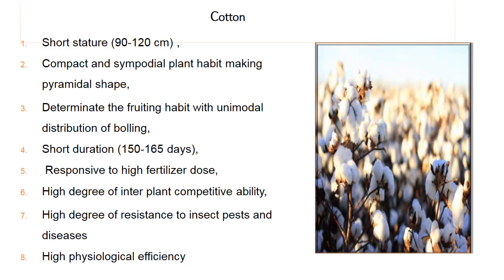For cotton, the idiotype defined is: short stature of 90–120 cm, compact and sympodial plant habit making a pyramidal shape, determinate fruiting habit with unimodal distribution of bolls, short duration of 150–165 days, responsive to high fertilizer dose, high degree of inter-plant competitive ability, high degree of resistance to insect pests and disease, and high physiological efficiency.